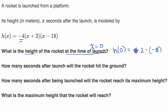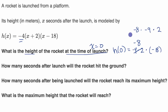So this is going to be negative eight times negative 18, which is the same thing as negative eight times negative nine times two. So this is going to be positive 72 times two, which is 144. So the height of the rocket at launch is 144 meters.